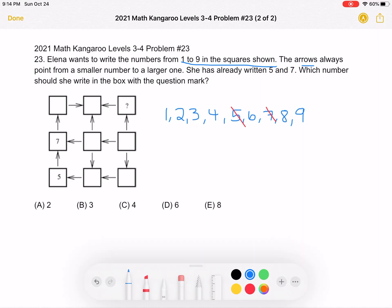And we know that the arrows always point from a smaller number to a larger one. So let's take a look at this box above the 7. 7 is a pretty big number out of our list. And if we have an arrow pointing from 7 to another box,